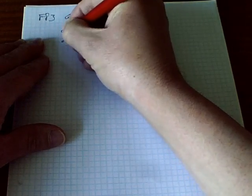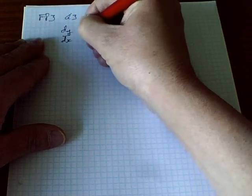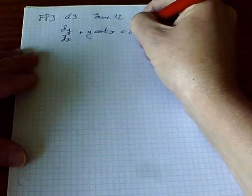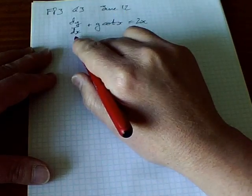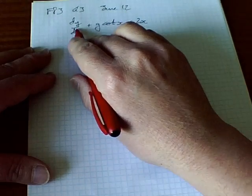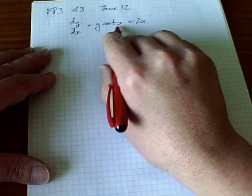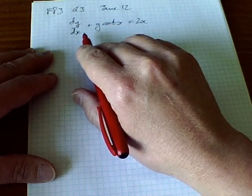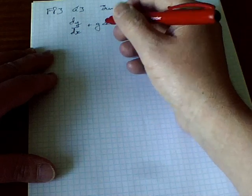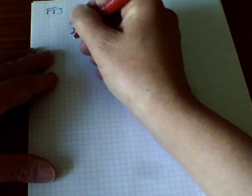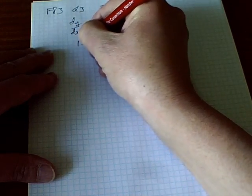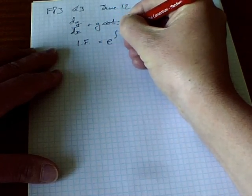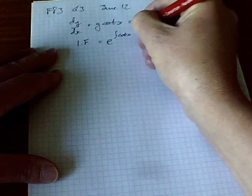The differential equation we have to solve is dy/dx plus y cot x equals 2x. This differential equation is in standard linear form: dy/dx plus y times some function of x equals some other function of x. So we're going to use an integrating factor to solve it. My P(x) in this situation is cot x, so my integrating factor is going to equal e to the integral of cot x dx.